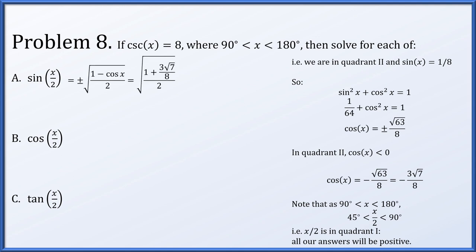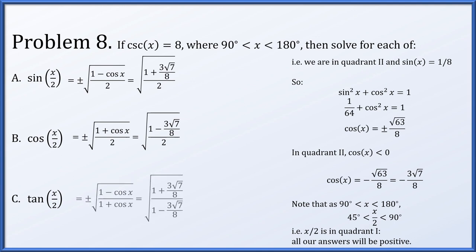So we just need to work through the various half angle formulas. Sine of x over 2 is plus or minus the square root of 1 minus cosine x, all over 2. We know we're in quadrant 1, so we pick the positive, and we know the cosine of x is negative 3 root 7 over 8. Similarly, the half angle formula for cosine of x over 2 is plus or minus the square root of 1 plus cosine x, all over 2. We're in quadrant 1, so we pick the positive, with cosine of x equal to negative 3 root 7 over 8.